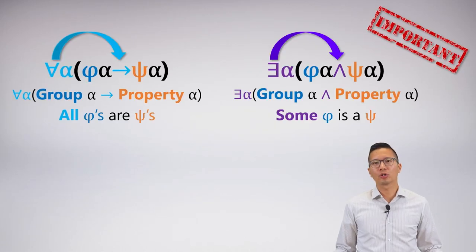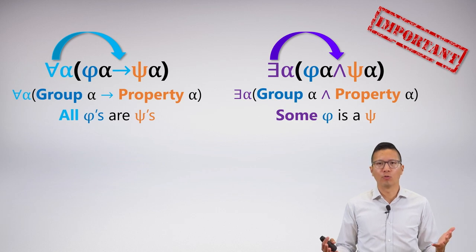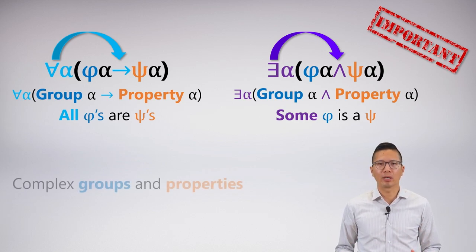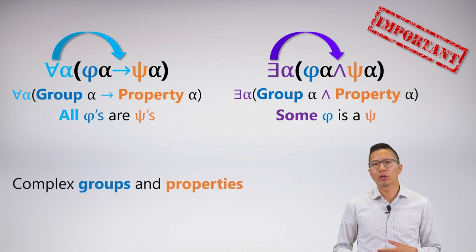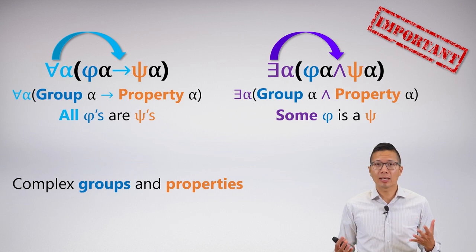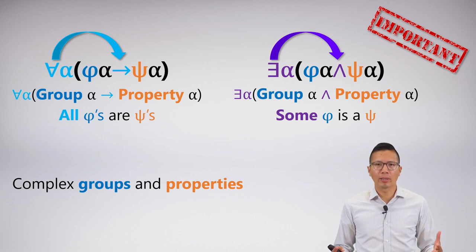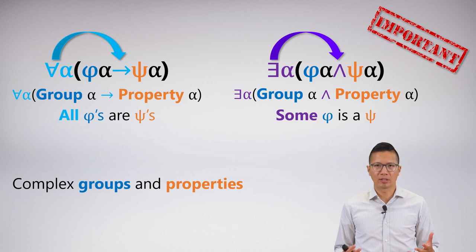Last video, we introduced the canonical forms of symbolization for the quantifiers, and we talked about quantifier meaning. We looked at some very simple examples, but really what we need to do is look at complex groups and properties and learn how to symbolize them.